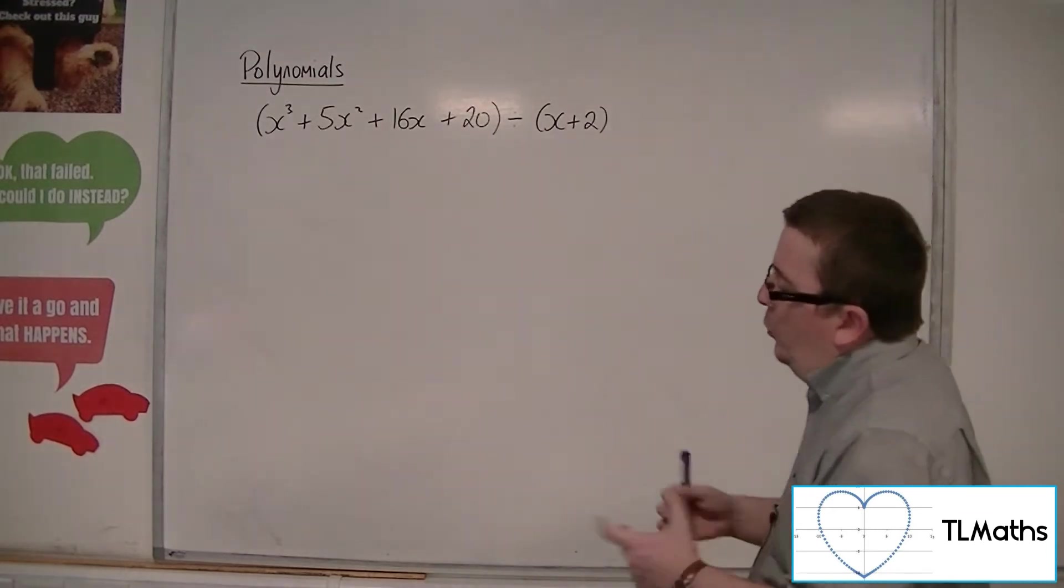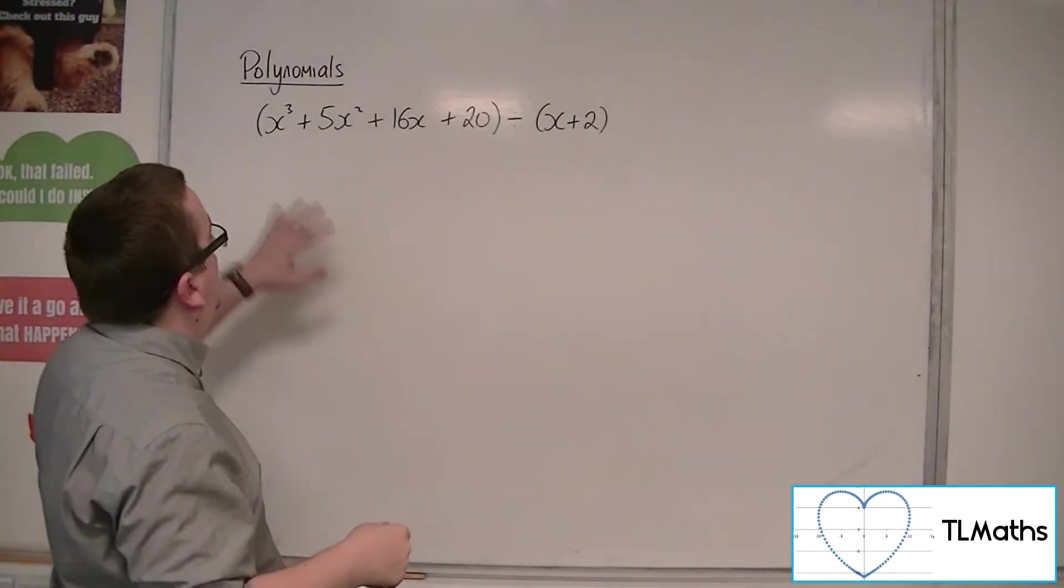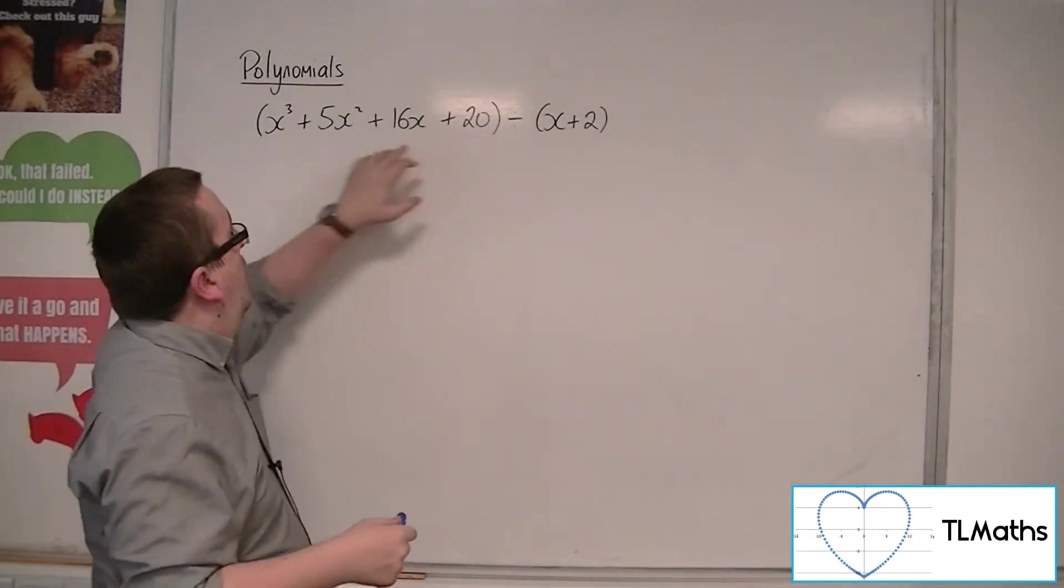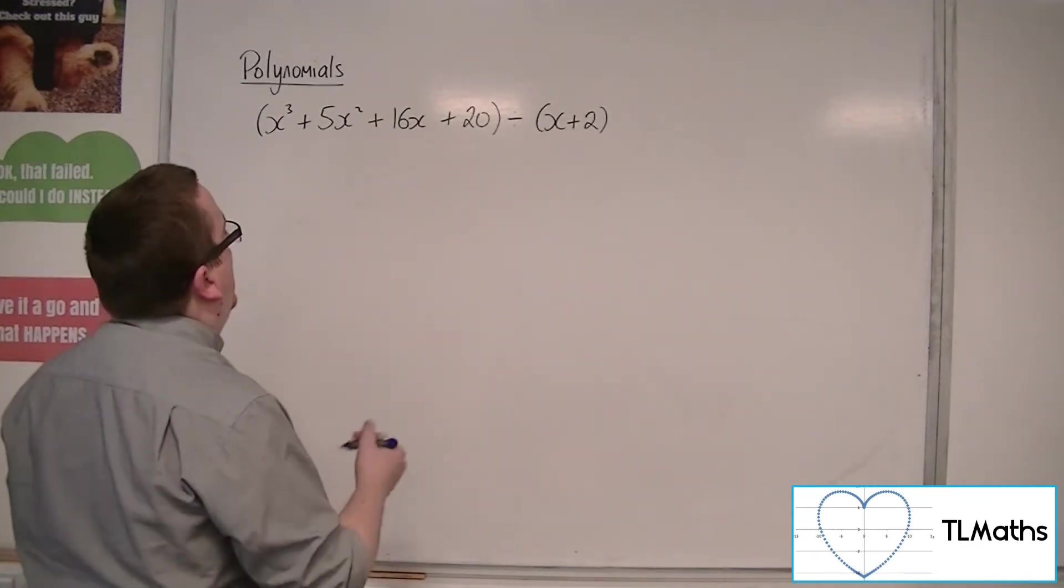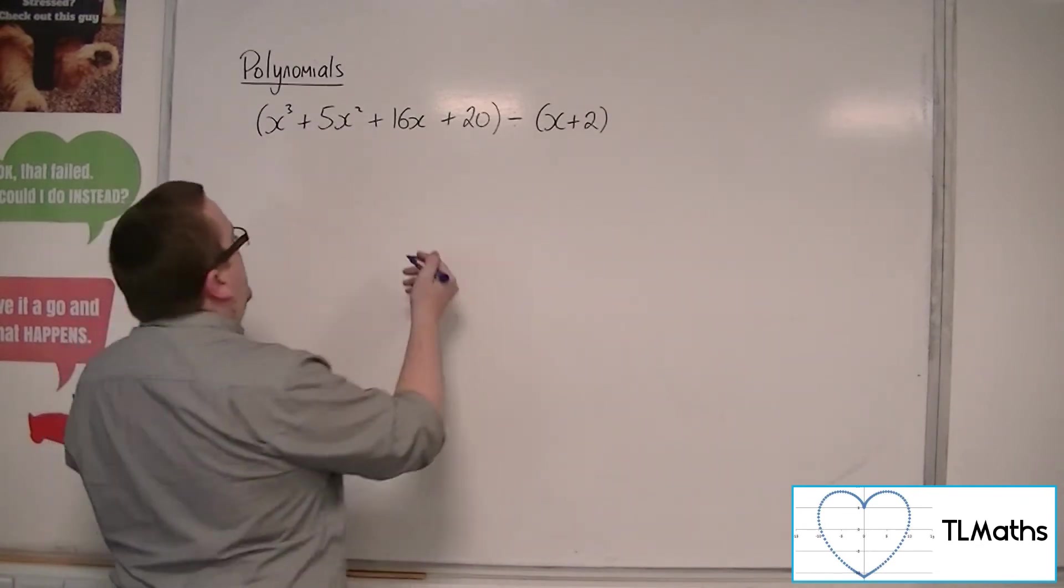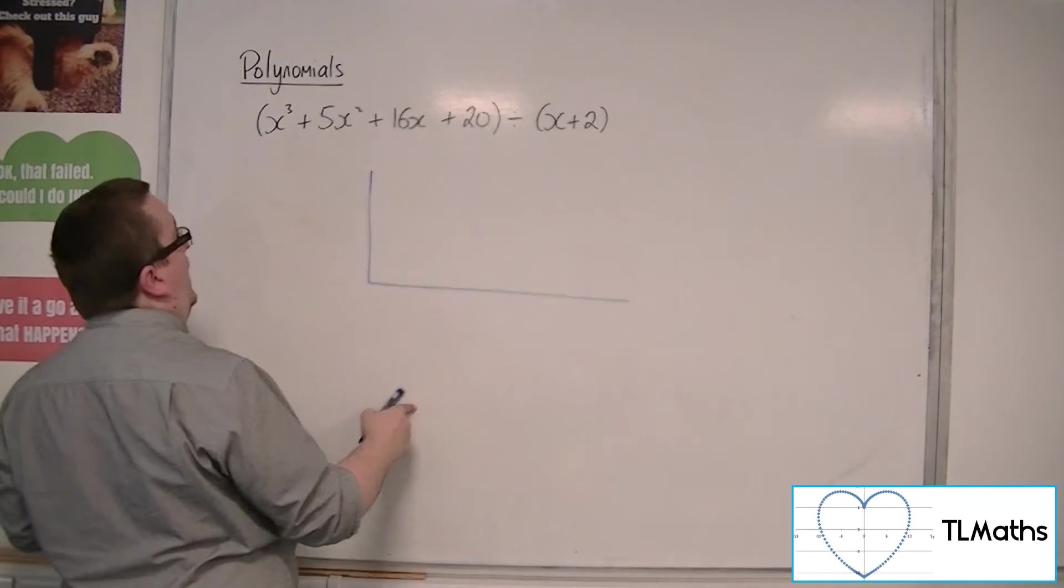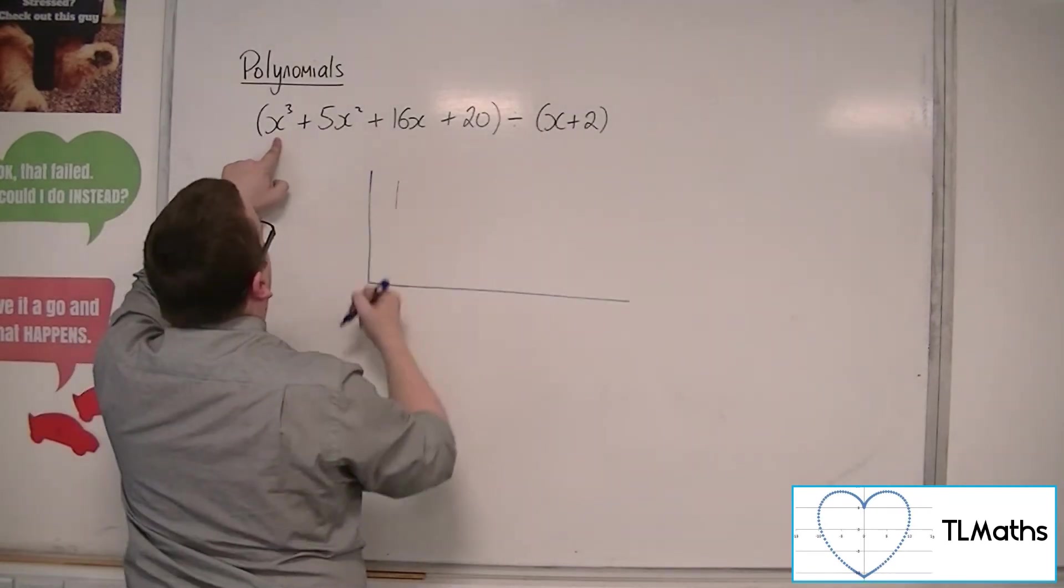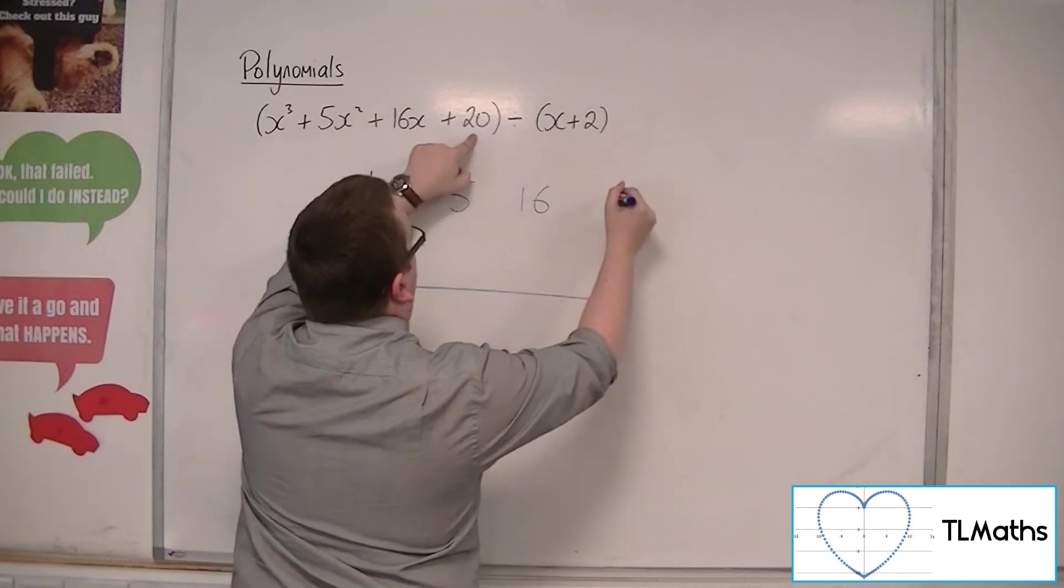The way that it works is that we write down the coefficients of the x cubed plus 5x squared plus 16x plus 20. In like a grid, we put it in this kind of L shape, and we're going to have 1, 5, 16, and 20.